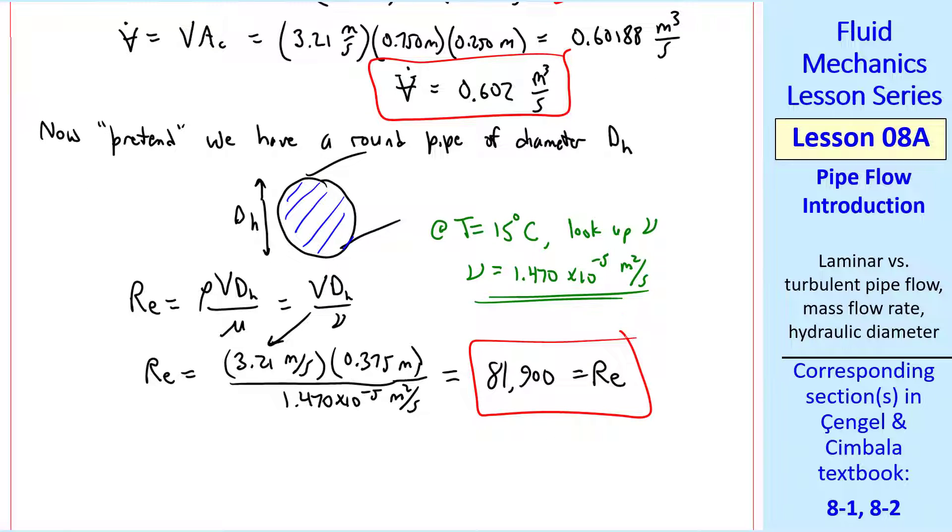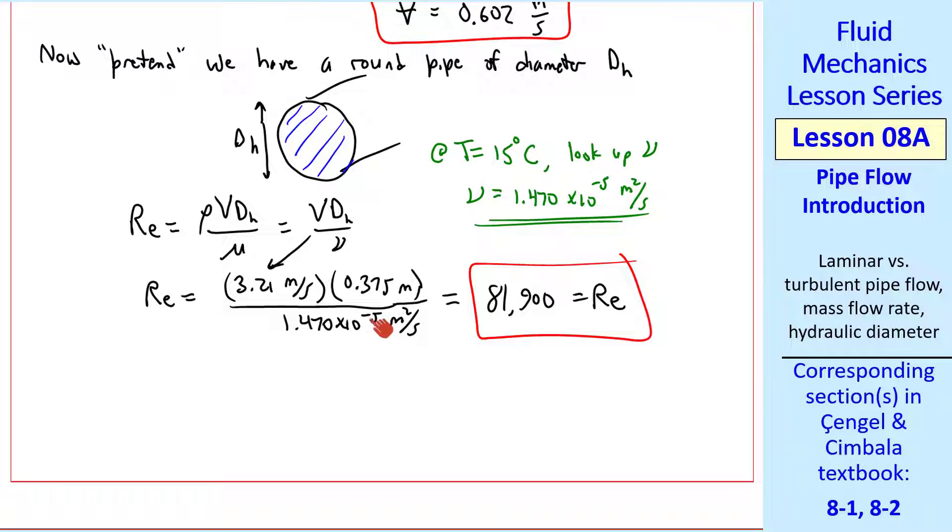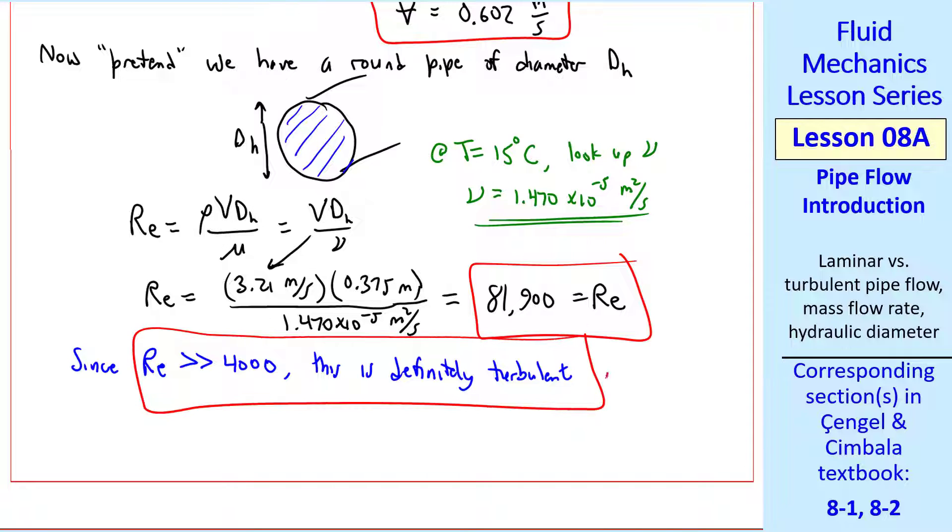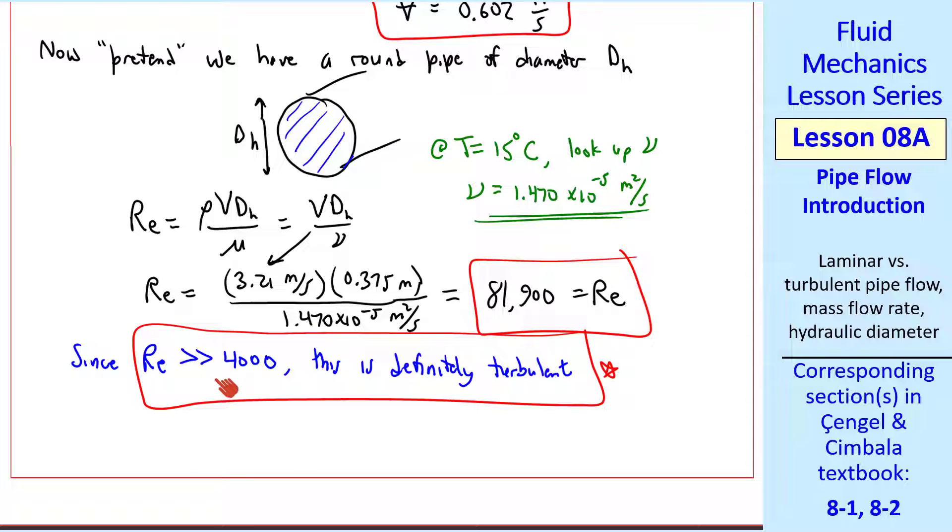Is this laminar, transitional, or turbulent? We use this Reynolds number to determine that. Since Reynolds number is much greater than 4,000, this is definitely turbulent. I'll say finally that even if this Reynolds number were below 4,000, it could still be turbulent. Because in an air conditioning duct, there's usually a lot of elbows, vibrations, and seams between sections of the duct. These are more likely to make the flow transition to turbulent.